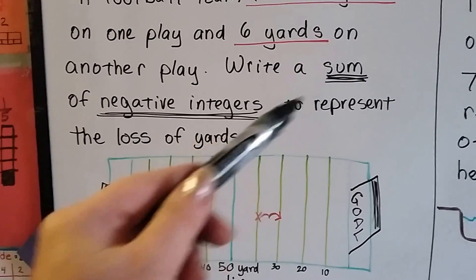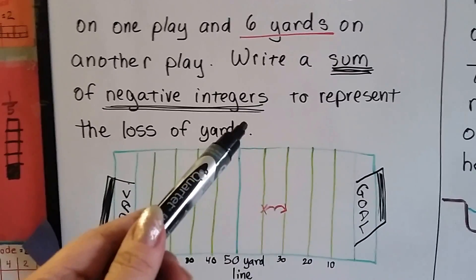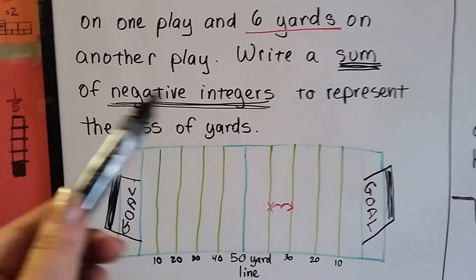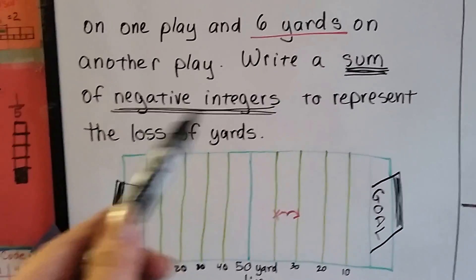It says to write a sum of negative integers. So it's already telling us what to do. We need a plus sign and we need to add up negative numbers.